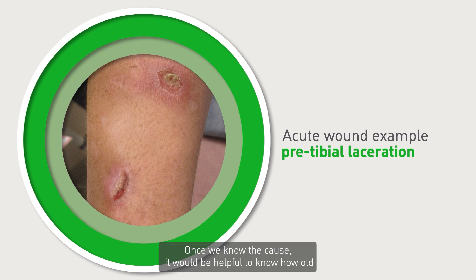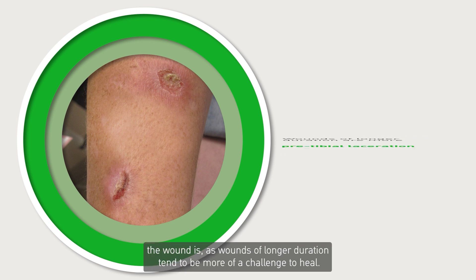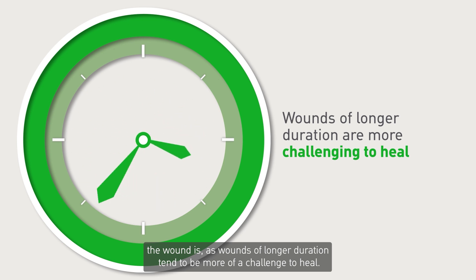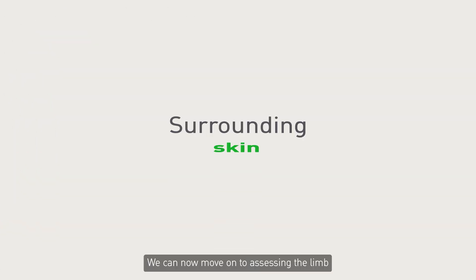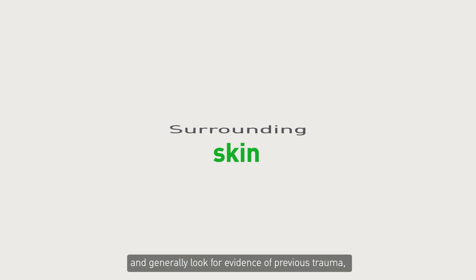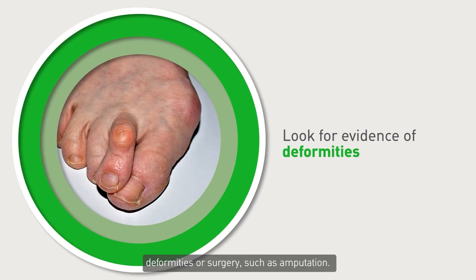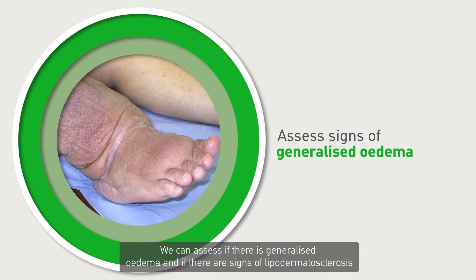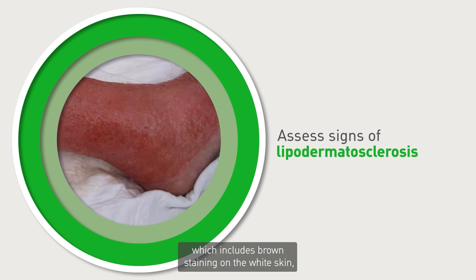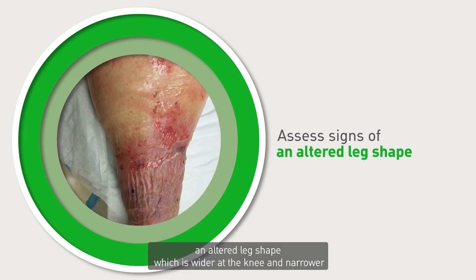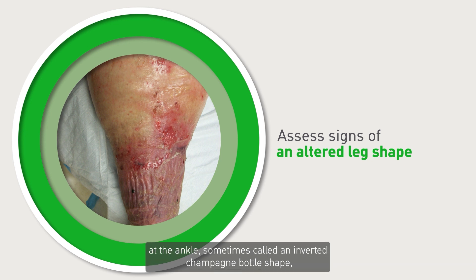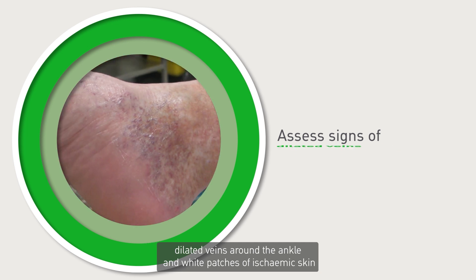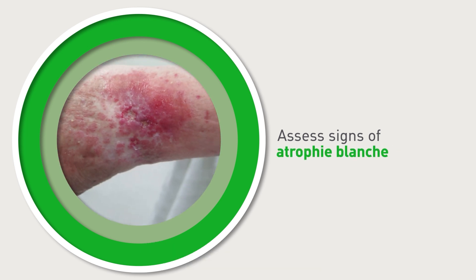Once we know the cause, it would be helpful to know how old the wound is, as wounds of longer duration tend to be more of a challenge to heal. We can now move on to assessing the limb, looking for evidence of previous trauma, deformities or surgery such as amputation. We can assess if there is generalised oedema and signs of lipodermatosclerosis, which includes brown staining on the skin, an altered leg shape wider at the knee and narrower at the ankle — sometimes called an inverted champagne bottle shape — dilated veins around the ankle, and white patches of ischaemic skin called atrophie blanche.